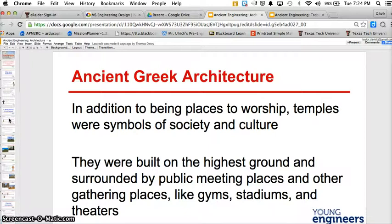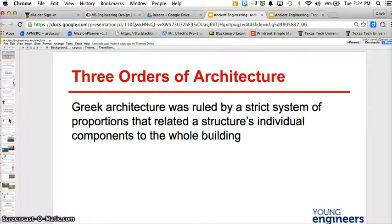In addition to being places to worship, temples were symbols of society and culture. They were built on the highest ground, surrounded by public meeting places and other gathering places like gymnasiums, stadiums, and theaters. Greek architecture was ruled by a strict system of proportions that related a structure's individual components to the whole building. So you're looking not just at one component, but the overall structure.